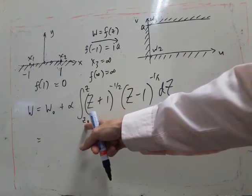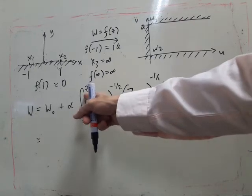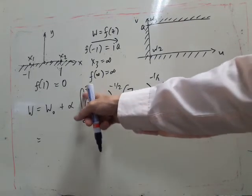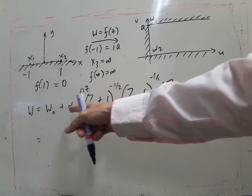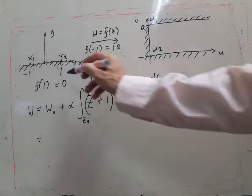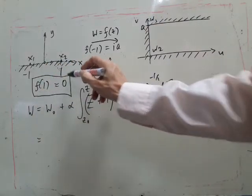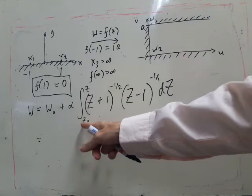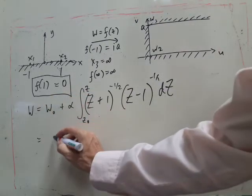Now this gives us a hint about how we're going to choose w0 and z0. If we make z0 one, then when we put z equals one, if this is one and this is one we get zero and that means we can choose w0 to be zero.